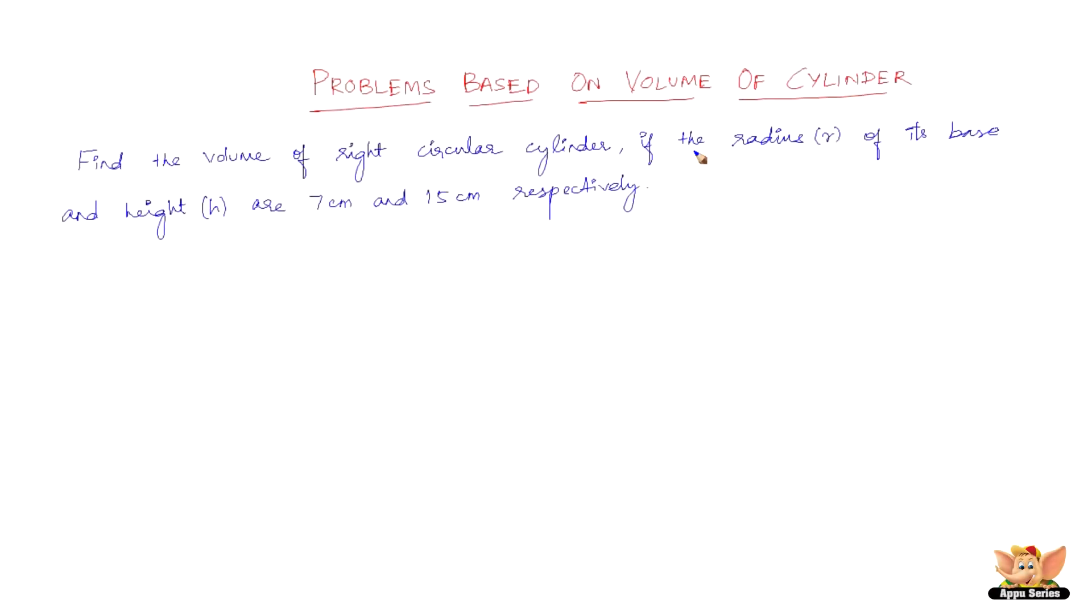This video let us solve some problems based on volume of a cylinder. The question goes like this: Find the volume of right circular cylinder if the radius r of its base and height h are 7 cm and 15 cm respectively.